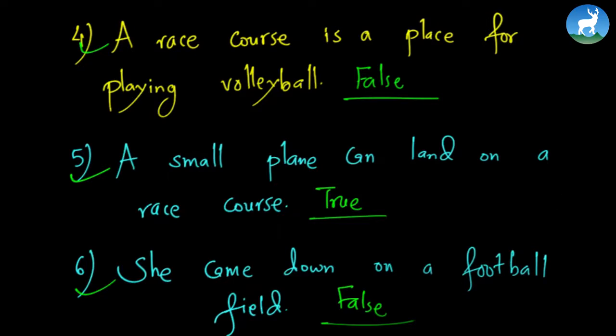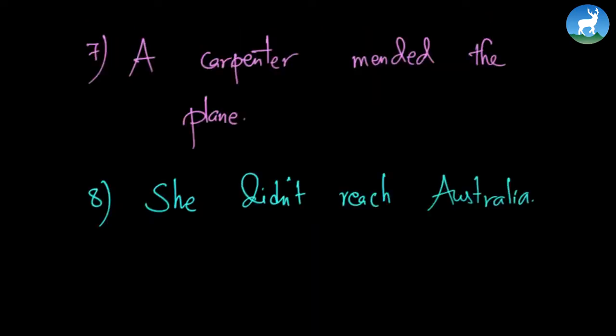Two more questions are there. Let's solve them. The first one is, a carpenter mended the plane, which is absolutely a wrong statement. So false, because not the carpenters, but the students mended the plane. They used their shirts and mended the wings. She didn't reach Australia. What nonsense. She of course reached Australia and she was in fact the first lady pilot to travel all the way from London England to Darwin Australia.